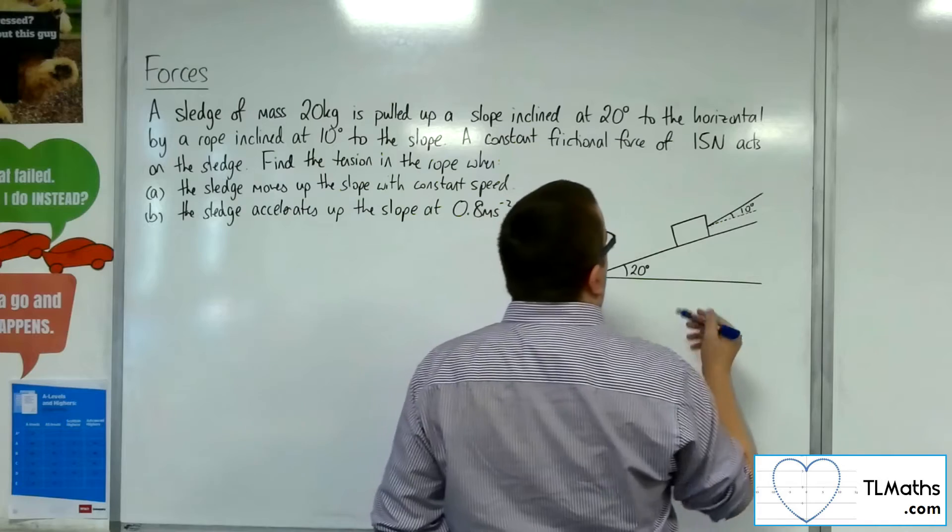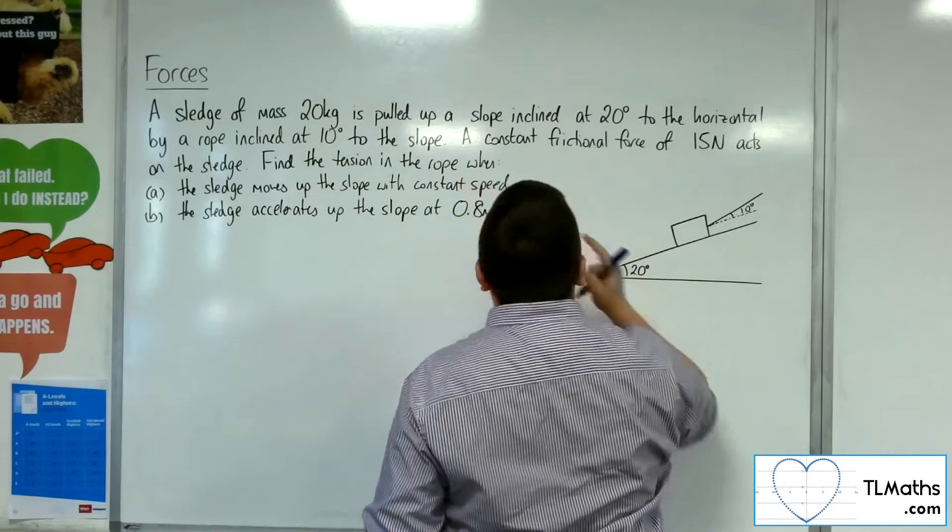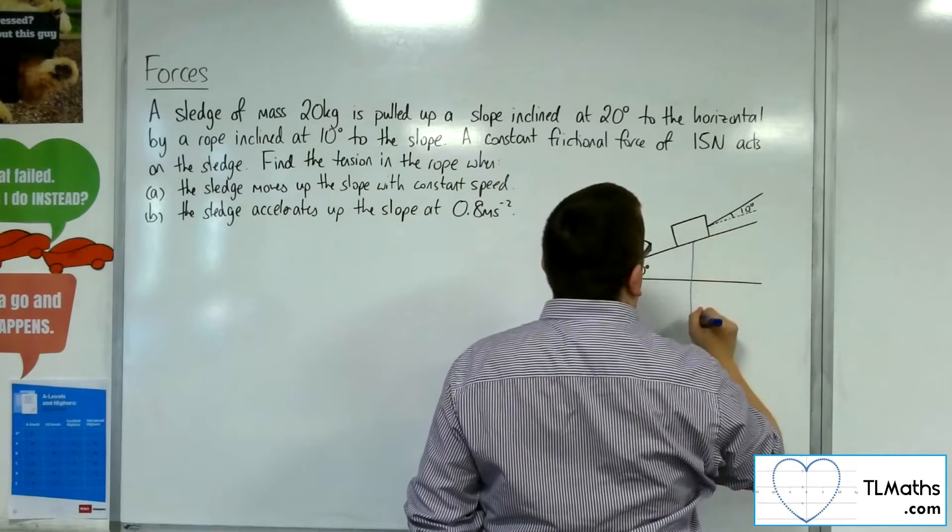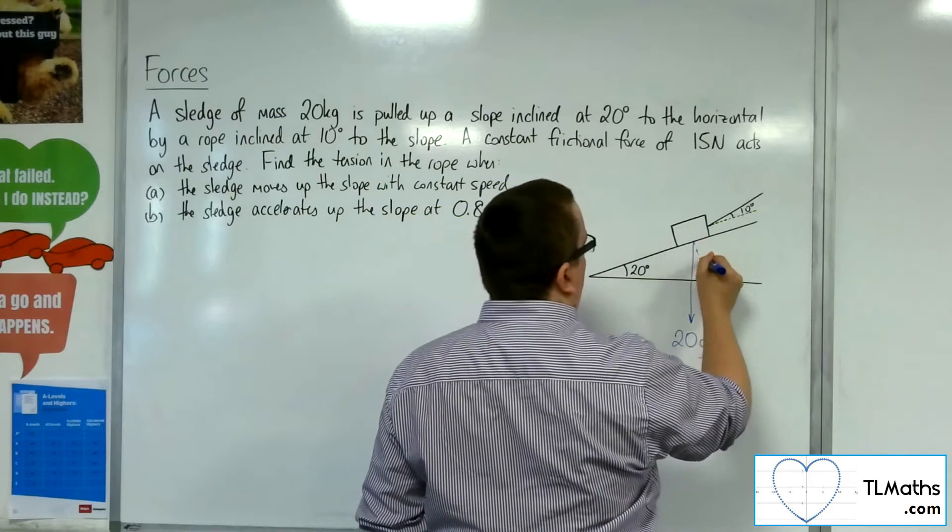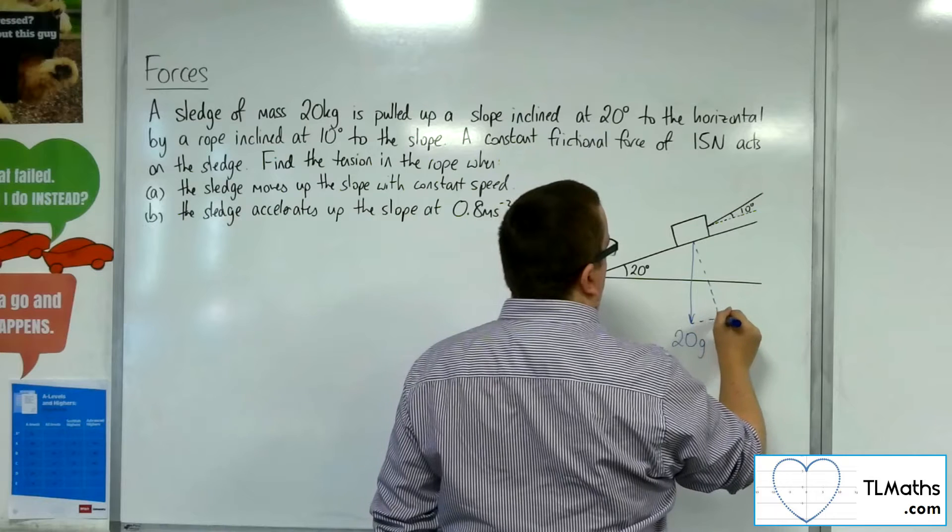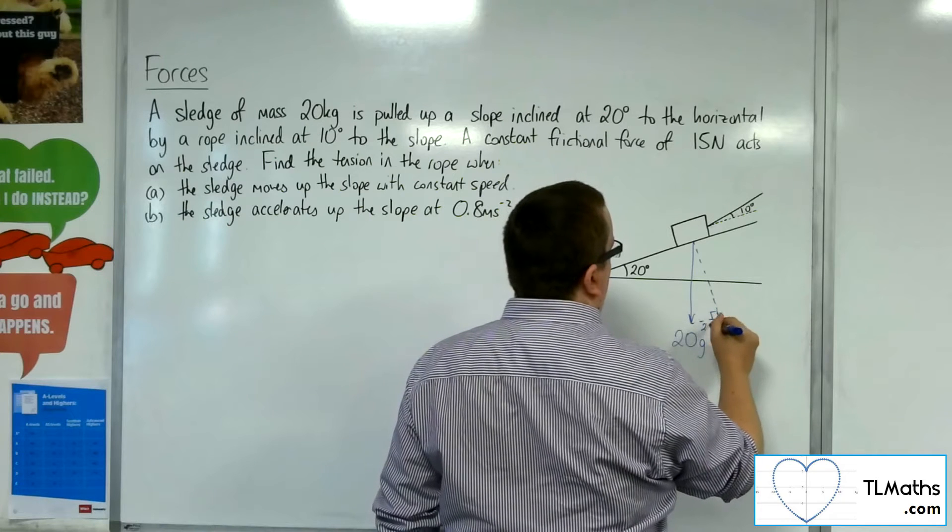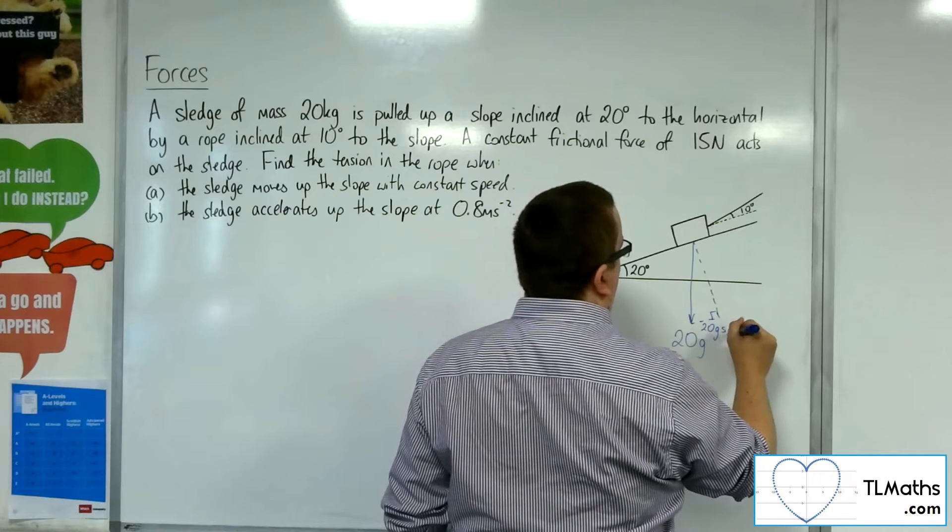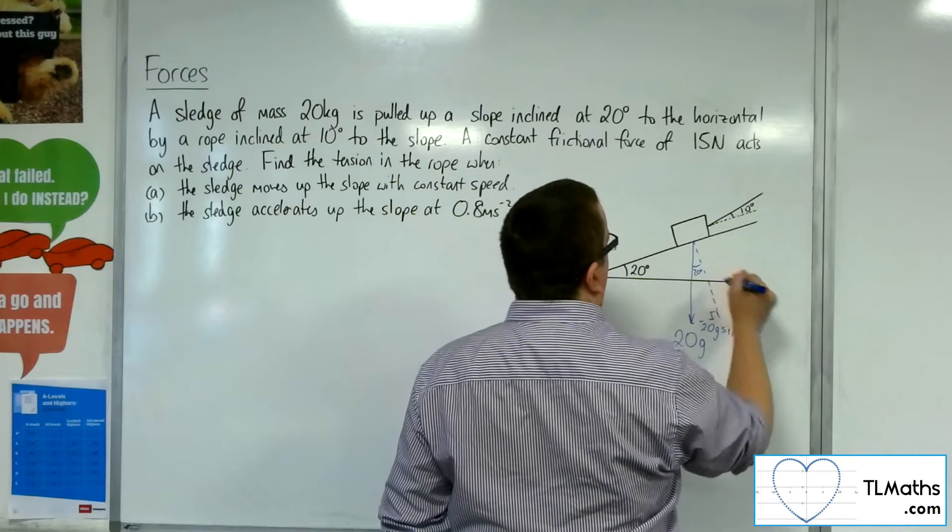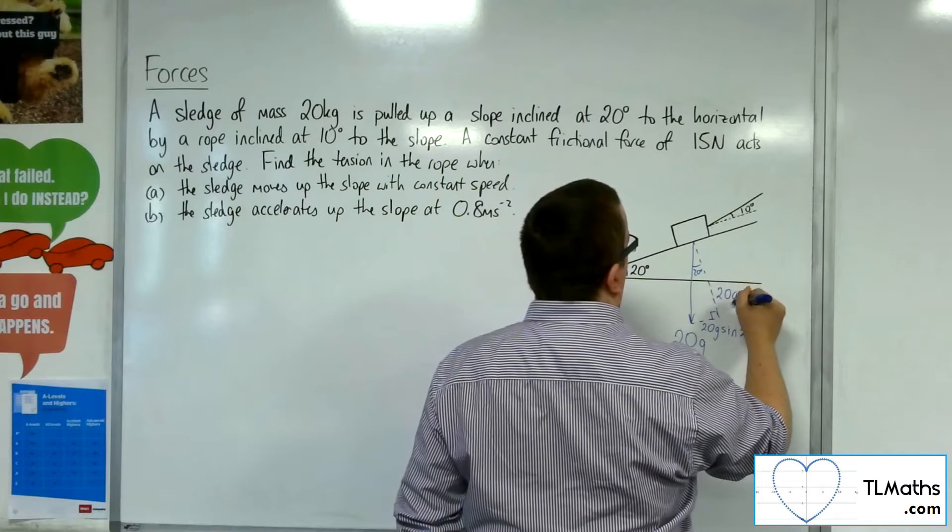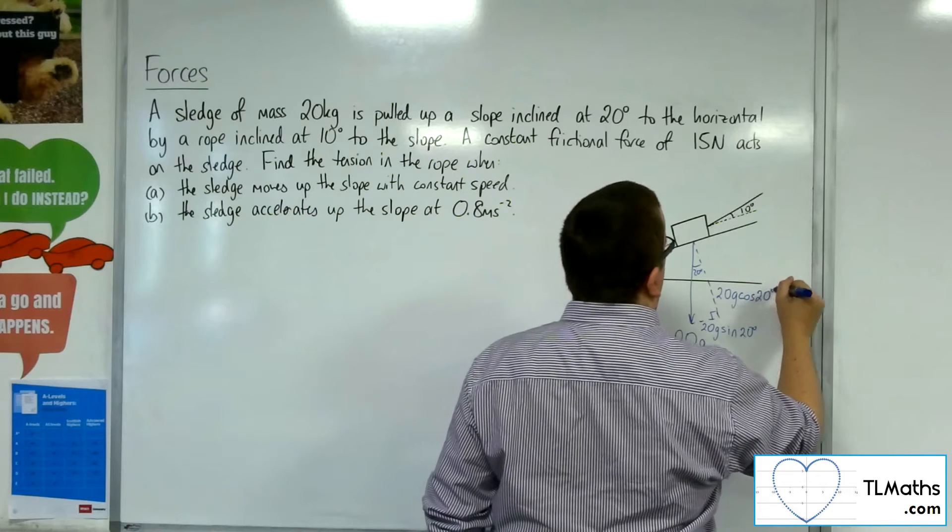So we've got this mass of 20 kilos. So 20g working vertically downwards. So here's my triangle. That will be 20g sine 20. So that's 20 degrees there. And 20g cosine 20 there.